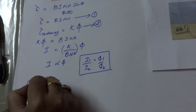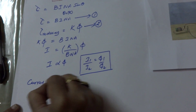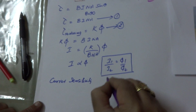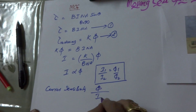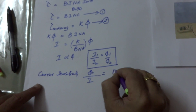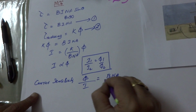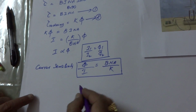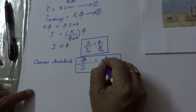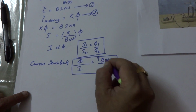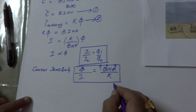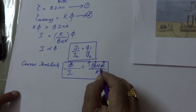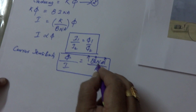We have to define two terms. One is the current sensitivity. Current sensitivity is defined as phi by I. If you rearrange, this equals B N A by K. How do you increase the current sensitivity? By increasing B, the magnetic field; by increasing the number of turns N; or by increasing the area A of the coil. But by increasing the number of turns, the instrument becomes very bulky, so there is a certain limitation for increasing the number of turns.